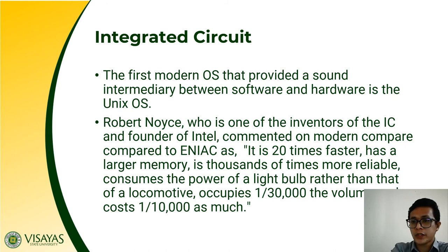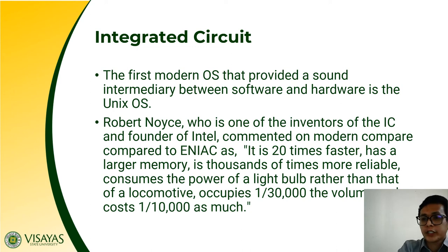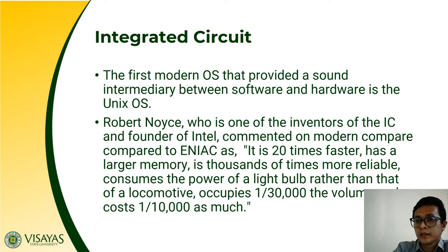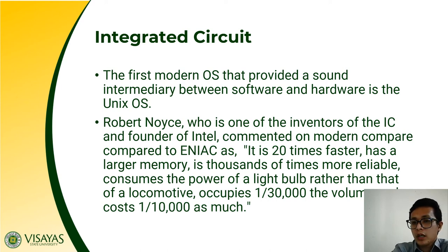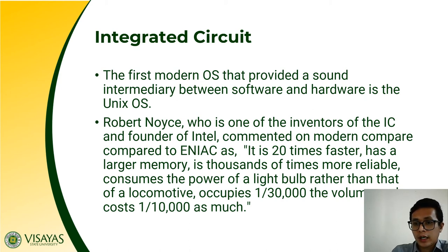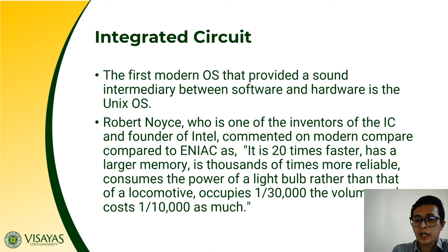Robert Noyce, one of the inventors of the integrated circuit and founder of Intel Corporation, commented on modern computers compared to ENIAC: the IC is 20 times faster, has a larger memory, is thousands of times more reliable, consumes the power of a light bulb rather than a locomotive, and occupies 1/30,000 the volume at 1/10,000 the cost compared to ENIAC. ENIAC was very expensive and costly to operate, consuming a lot of electricity.